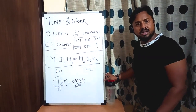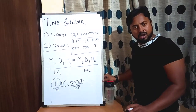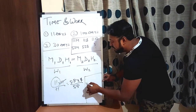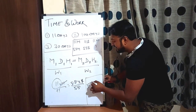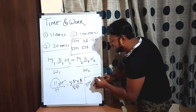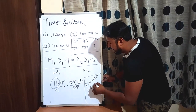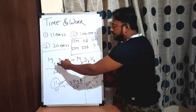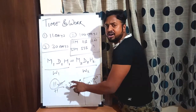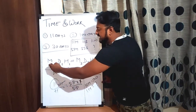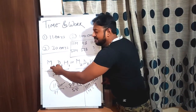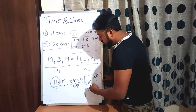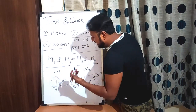Are you getting it? Second question: 10 men, 10 days — one man, how many days? No hours, no work variables, so the formula reduces to M1 × D1 = M2 × D2. M1 = 10, D1 = 10, M2 = 1, D2 = X.